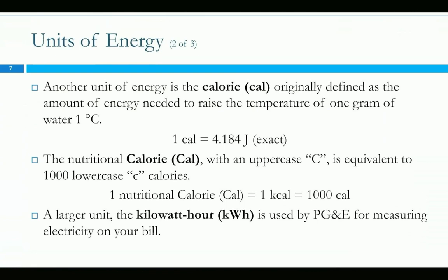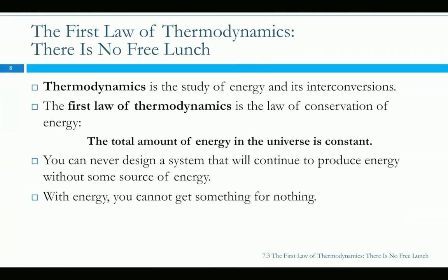Some other units of energy: the calorie is 4.184 joules exactly, because the calorie was related to the amount of energy it takes to heat one gram of water by one degree C. That's calorie with a lowercase 'c'. The nutritional calorie — like when you eat a granola bar with 160 calories — that's capital C, which is 1,000 lowercase calories, like a kilocalorie. So a 2,000 Calorie diet is actually a 2,000,000 lowercase calorie diet. Kilowatt hours are what PG&E uses, and electric car batteries are measured in kilowatt hours. We really do just stick to joules, although the lab manual might use calories sometimes.